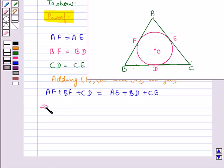Now if you look at the figure you can see that AF plus BF equals AB. So we have AB plus CD equals AE plus CE, which equals AC. So we have AC plus BD.